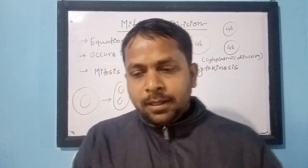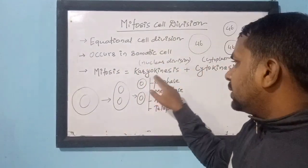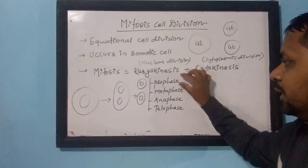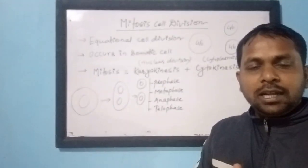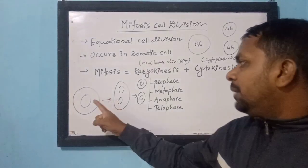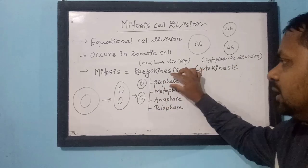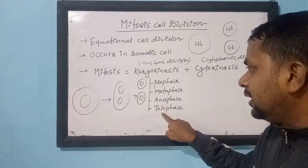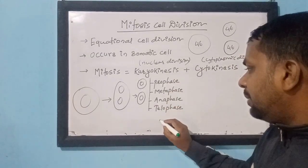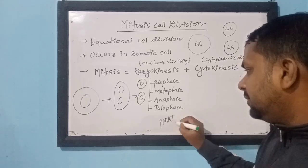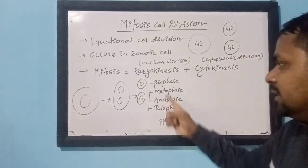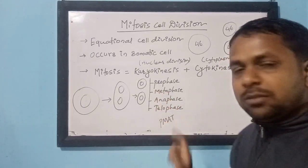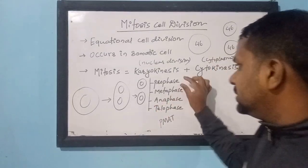Karyokinesis — nuclear division — occurs in four stages. These four stages are prophase, metaphase, anaphase, and telophase. We can remember this using the mnemonic PMAT: the first letter of each stage — Prophase, Metaphase, Anaphase, Telophase.